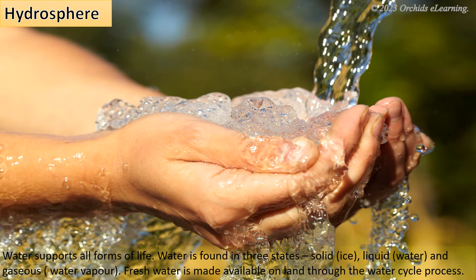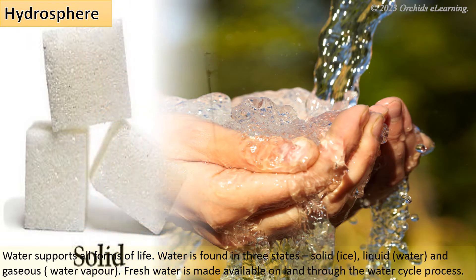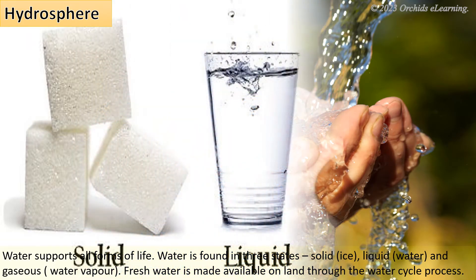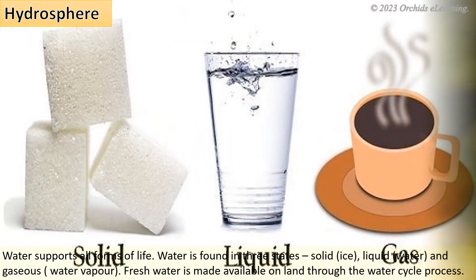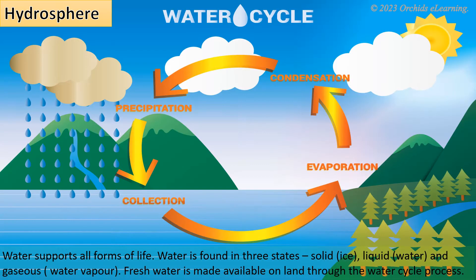Water is found in three states: solid ice, liquid water, and gaseous water vapor. Fresh water is made available on land through the water cycle process.